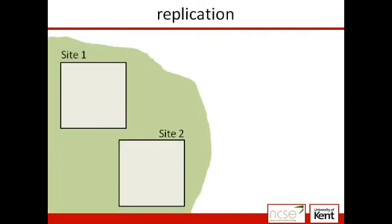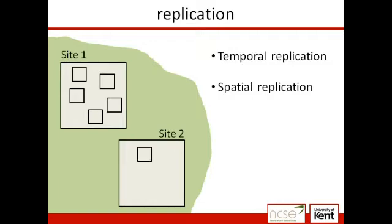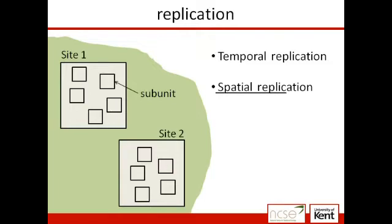This replication is often achieved by visiting each sampling site repeatedly at different points in time. Another option is to use spatial replication, in which we would define a number of subunits within each sampling site and treat the surveys carried out in each of these as separate replicates. This is the type of replication that interests us in this paper.